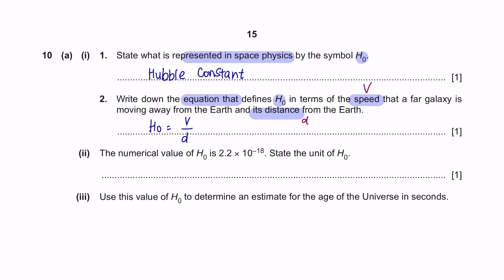Part 2. The numerical value of H0 is 2.2 times 10 to the power of negative 18. State the unit of Hubble constant. The unit here is seconds. As long as you know the theory, you should be able to answer all these three questions very easily.